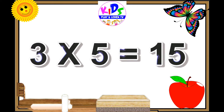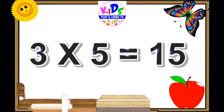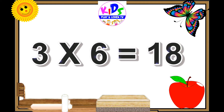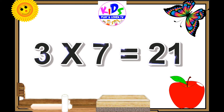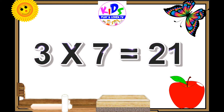Three fours are 12, three fives are 15, three sixes are 18.